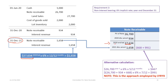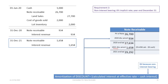The debit to notes receivable keeps building the balance up to $30,000. Adding the $1,658 to the account gives an ending balance of $29,292. The amortization of the discount here is again calculated interest minus cash interest — there is no cash interest, just the calculated amount.